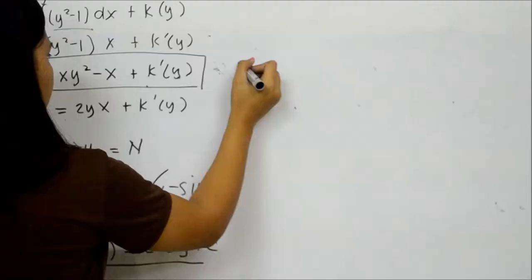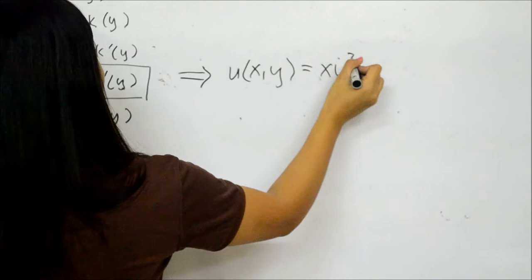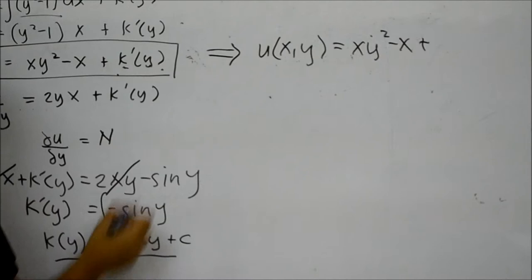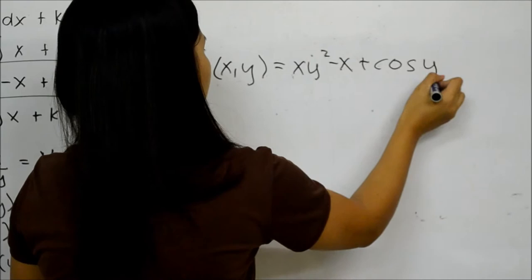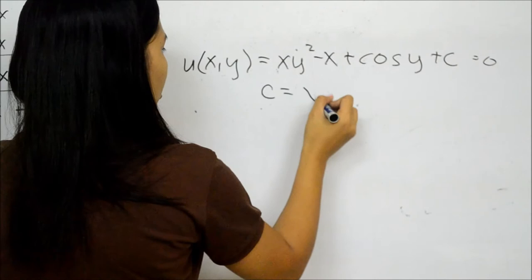We substitute this k(y) back into our function u. So u(x, y) = xy² - x + cos y, and we solve for the constant C: the solution is xy² - x + cos y = C.